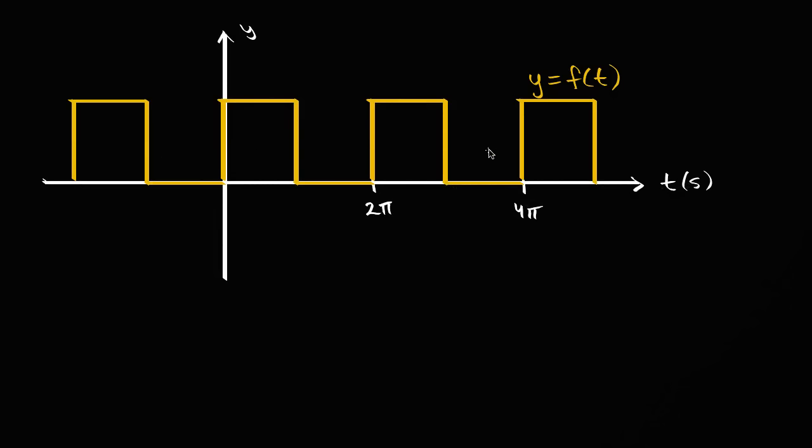And this type of function is often described as a square wave. And we see that it is a periodic function, that it completes one cycle every two pi seconds.